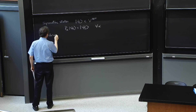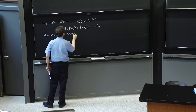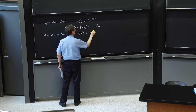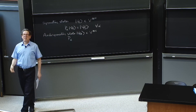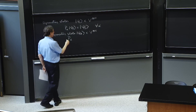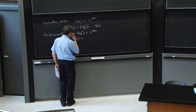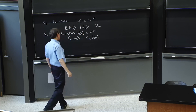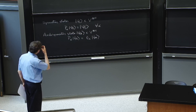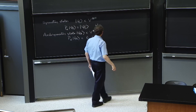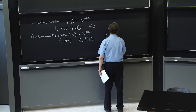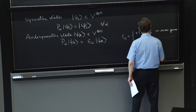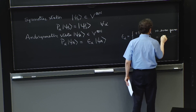Then there would be anti-symmetric states, psi_A. We concluded that an anti-symmetric state, also a state in this tensor product, would react differently to the permutation operators — it would change up to a sign: P_alpha psi_A equals epsilon_alpha times psi_A. So it would be an eigenstate of all permutation operators, with eigenvalue epsilon_alpha, where epsilon_alpha equals plus 1 if P_alpha is an even permutation.